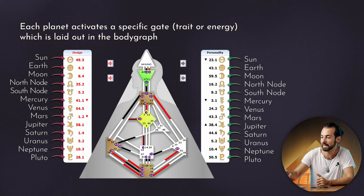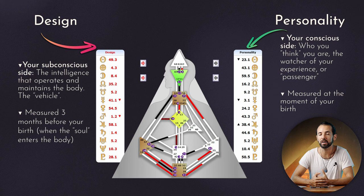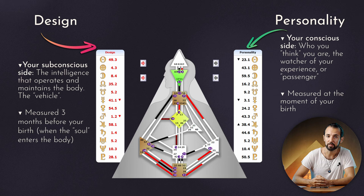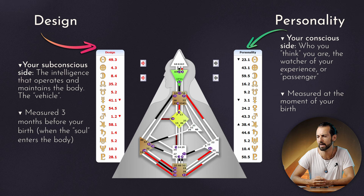But why is there one in black and another in red? The one in black is your personality — this is what you're aware of, something you're conscious of. It's your mind, it's very present, it's what you do. This is calculated in the moment of your birth, the moment you come out of the womb. Then there is the design part — this is the red part. It is calculated three months before you are born. It is believed that is the moment the soul enters your body. It's what you are, it's being — something subconscious, deep in the intelligence of your body that you may not be necessarily aware of.